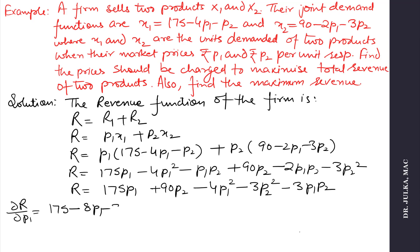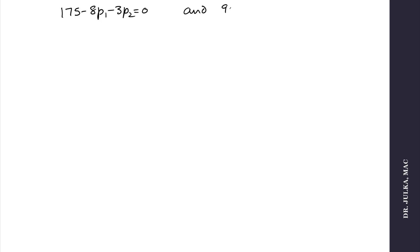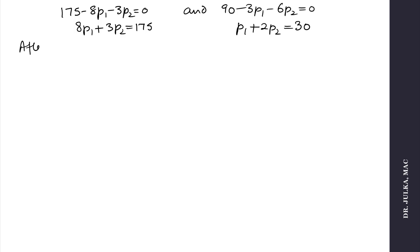The first derivative with respect to p1 is 175 minus 8p1 minus 3p2, and the first derivative with respect to p2 is 90 minus 6p2 minus 3p1. Setting both equal to zero to find the critical point: 175 minus 8p1 minus 3p2 equals 0 and 90 minus 3p1 minus 6p2 equals 0. After simplification and solving these two equations, we get p1 equals 20 and p2 equals 5. So the critical point is (20, 5).